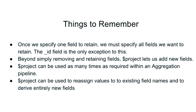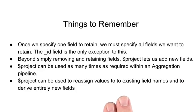We're beginning to see the power of project. Project is a powerful stage: not only can we remove and retain fields, we can derive new fields and reassign existing fields. Project may be used as many times as desired within an aggregation pipeline and should be used aggressively to trim data out of documents that isn't required to keep our pipelines performant. Key things to remember: once we specify one field to retain, we must specify all fields we want to retain (the underscore ID field is the only exception); project lets us add new fields; and project can reassign values to existing field names and derive entirely new fields.